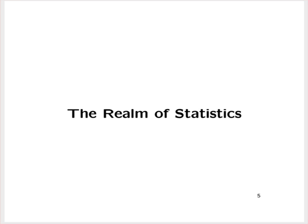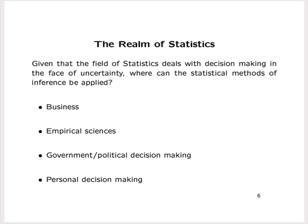That's what we mean by the field of statistics. Now, what is the realm of statistics? Given that the field of statistics deals with decision-making in the face of uncertainty, where can statistical methods of inference be applied? Think about all the ways you could imagine having to make decisions in the face of uncertainty — where do we have incomplete information about the process or population we want to know something about?